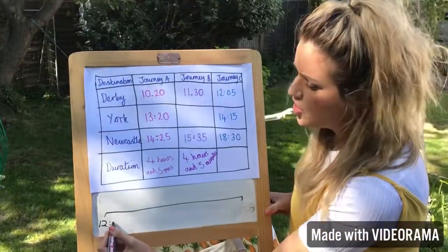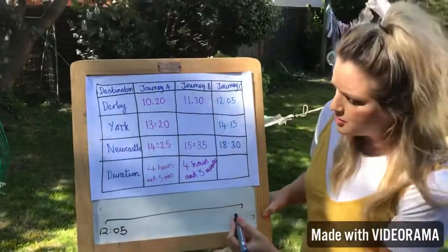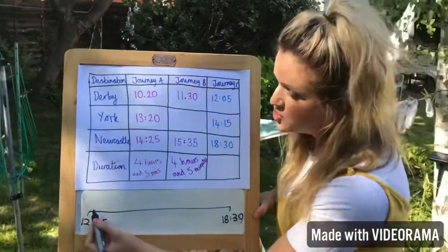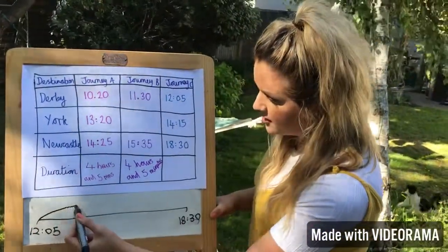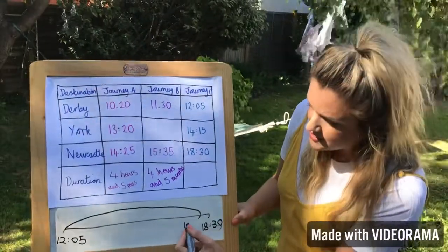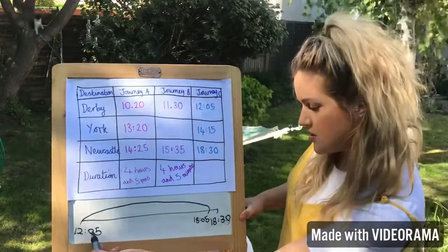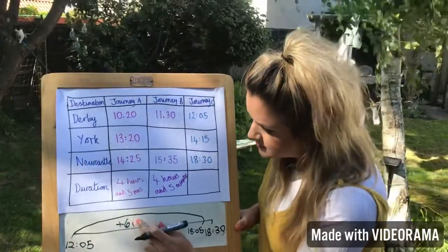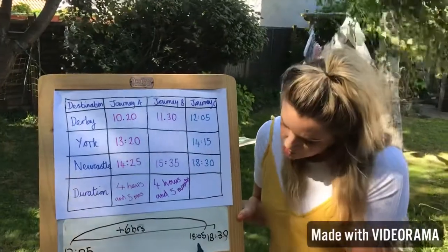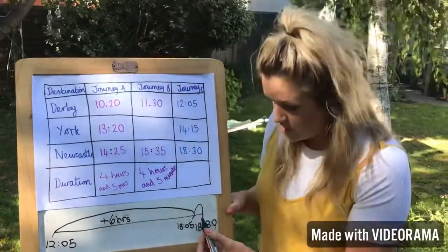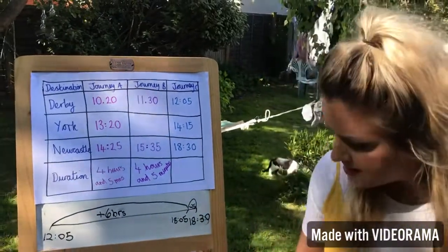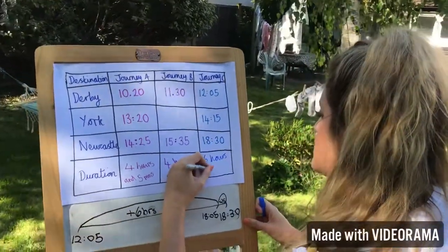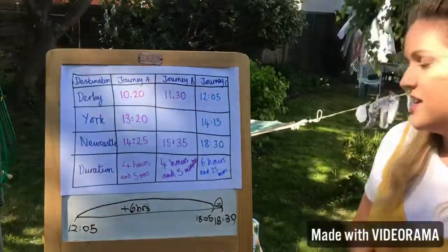Journey C's start time is 12:05, and then it arrives in Newcastle at half past six in the evening — 18:30. I'm going to use my time hack and land at 18:05. Think about how many hours this represents — that's six hours. And then from 18:05 to 18:30, that's 25 minutes. So Journey C is six hours and 25 minutes — it's definitely the slow train!